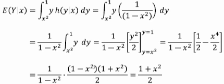And then that allows us to cancel the 1 minus x squared in the numerator and the 1 minus x squared in the denominator. And we're therefore left with 1 plus x squared over 2.